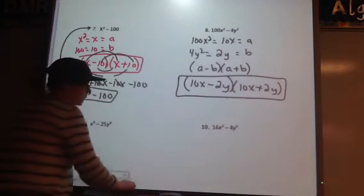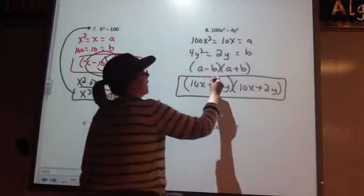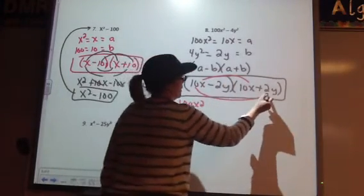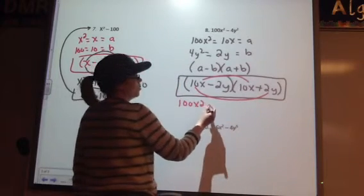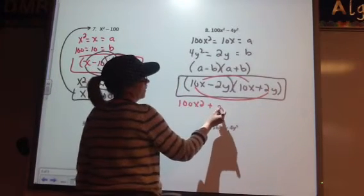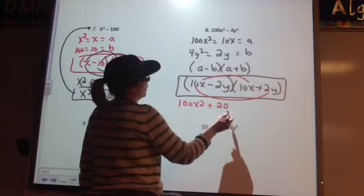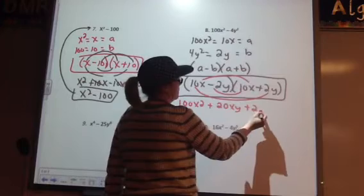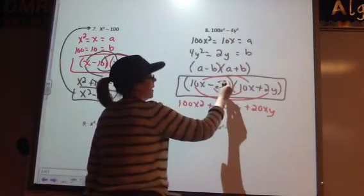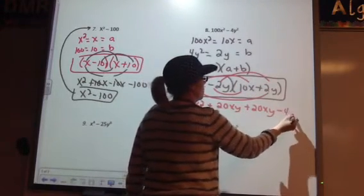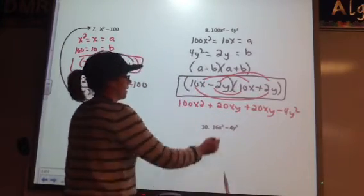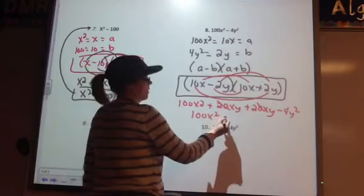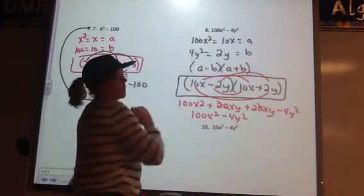And let's not forget to FOIL it to make sure. So I have 10x times 10x. I have 10x times 2y, positive 2y. So what is that? 20xy. Then I have negative 2y times 10x. And then I have a negative 2 times a positive 2y. These cancel out. So I end up with 100x squared minus 4y squared, which is what we started with.